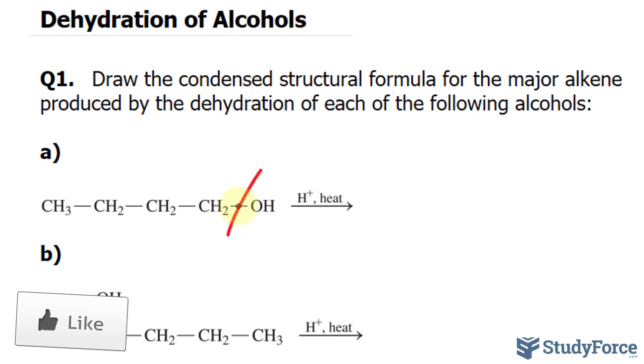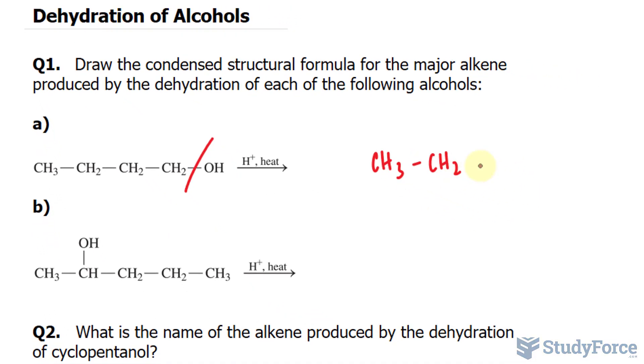And if we cleave that away, we have an extra electron. That electron will make a double bond with the adjacent carbon to its left. So what we should have here is CH3-CH2-CH2 double bonded with another. What ends up forming here is 1-butene.